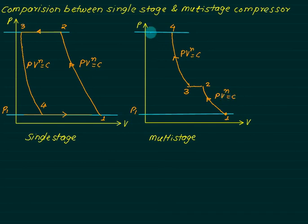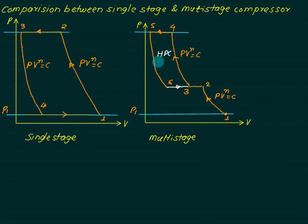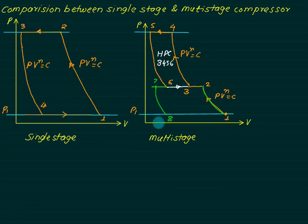At point four to five we have delivery for the HP cylinder. Five to six is the expansion in the HP cylinder, and six back to point three completes the HP cylinder cycle. The HP cylinder works from three (suction), four (delivery), five, and six, whereas the LP cylinder works from one to two. The clearance of LP is slightly higher, giving points seven and eight, where eight to one is suction for LP and six to three is suction for the HP compressor.